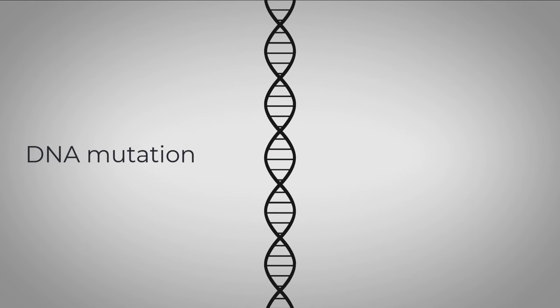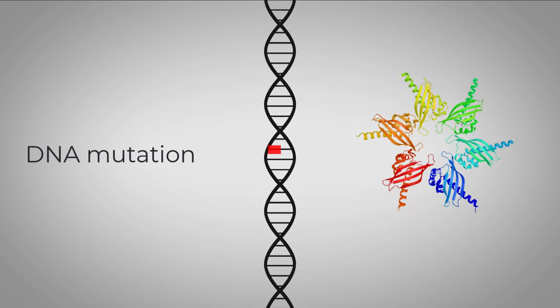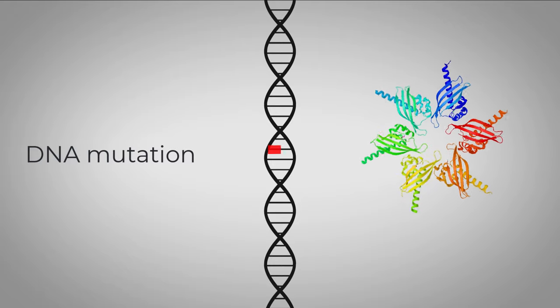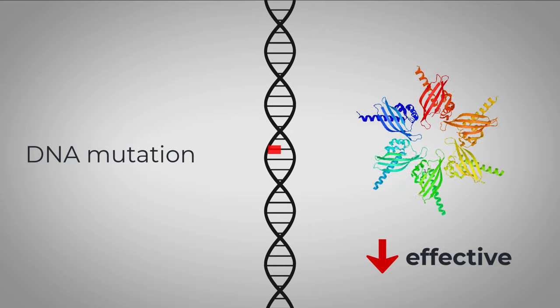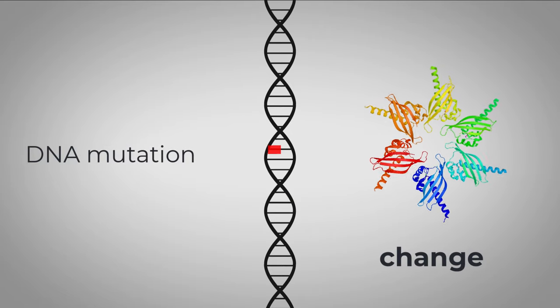A DNA mutation might change one type of protein just a little bit to make it more effective at its job or a little bit less effective at its job or change its job altogether.